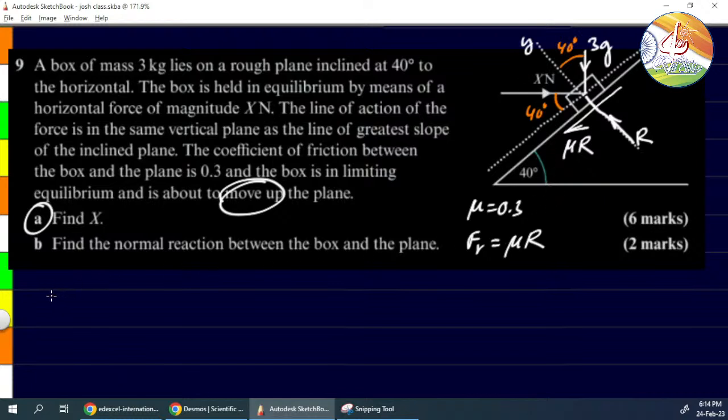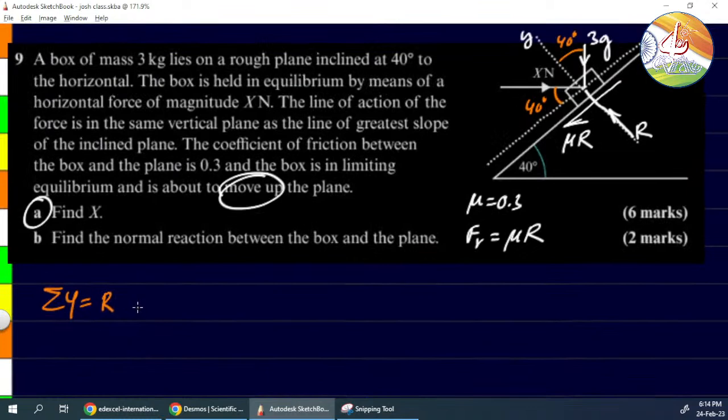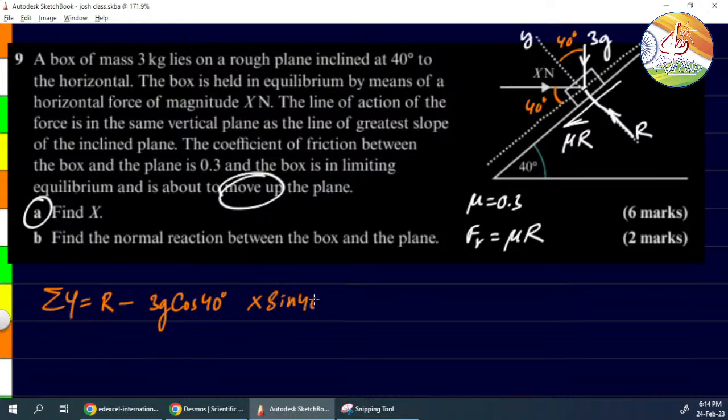Let's take y-components first. So R is acting upwards. Then the component of 3g will be 3g cos 40 degrees, and it will act in negative y-direction, so negative. Then again, the x component of X is X sin 40 degrees, and this component is acting downwards, so minus.